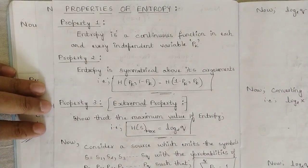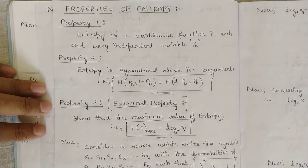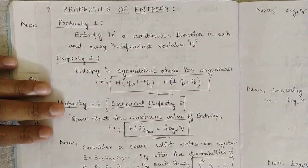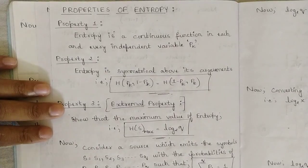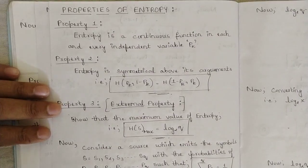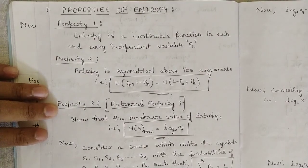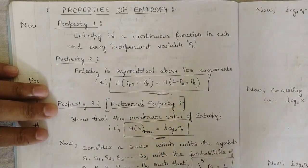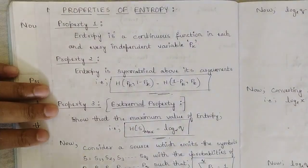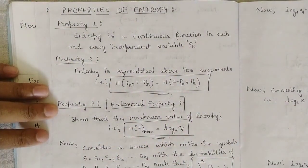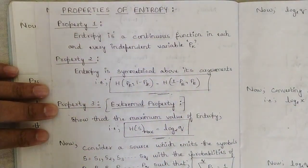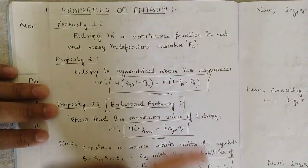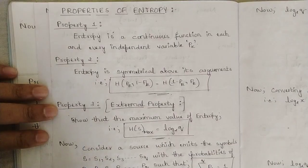Hello everyone, welcome to this new video. This video is very important because what I am going to be discussing is a sure shot fixed question with respect to the final exam of digital communication: list out the properties of entropy. There are four sets of properties under entropy which you need to know. Whatever I have written in these notes, write in the same way for the exam and you would be getting full marks. Please like this video and subscribe to our channel.